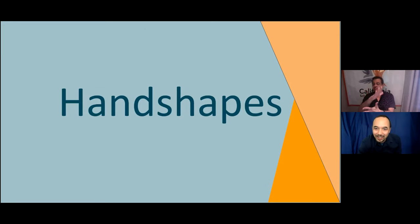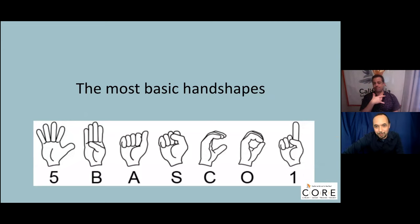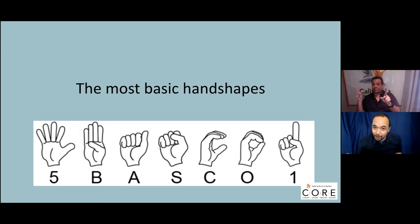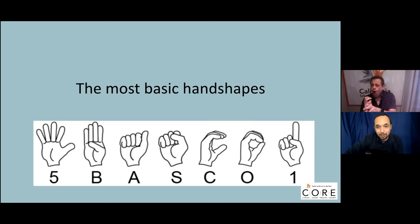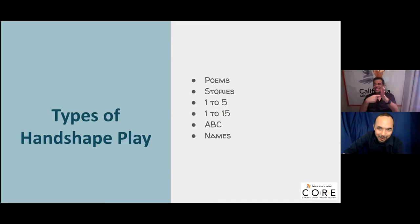Now let us talk about handshapes. These are the most basic handshapes we use with ECE kids, from infants. In the tiny kid classes, we do poems and games. They tend to use these first: the 5, B, A, S, C, O, and 1 handshapes. Right now, this is the time when speaking children are developing their vocal tracts — a lot of that comes later. But babies who sign and point and gesture start with the handshapes easiest for them to form. The bent-V handshape is a tough one; these simpler ones are very easy for little ones.